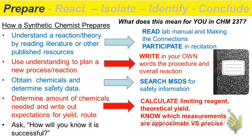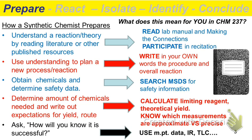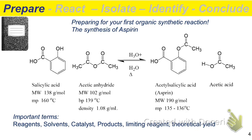The last thing we'd ask is: how is it going to be successful? Yield is one thing we can determine quickly, but we could also go through identification techniques like melting point, IR, and TLC — the three big common ones you've dealt with so far. As part of preparation, we'd also want to look at the reaction and understand the mechanism so we could adjust and predict accordingly.